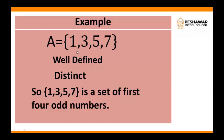Dear students, first apply the word object. 1, 3, 5, 7 are all called objects of a set. As you know, object means members of a set. So we can say that 1, 3, 5, 7 are all objects of a set.